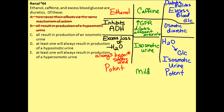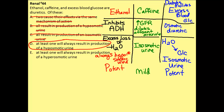Response C says all result in production of an isoosmotic urine. We saw that was the case for caffeine and excess blood glucose, but not for ethanol, so we can eliminate C. Response D says at least one will always result in the production of a hypoosmotic urine — that is true of ethanol, because we're inhibiting ADH, so that is a correct response. Response E says at least one will always result in the production of a hyperosmotic urine, and that wasn't the case for any of our diuretics, so we can eliminate E.